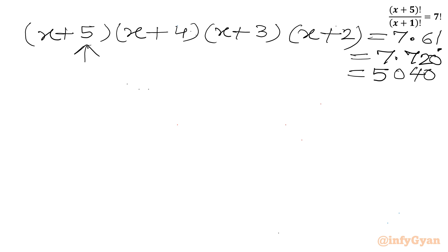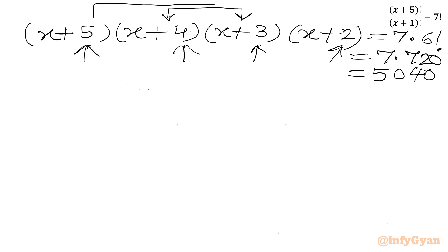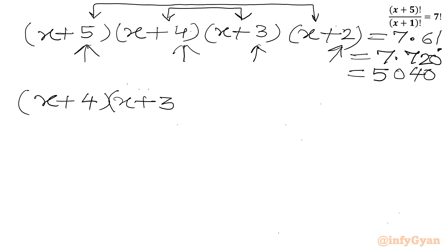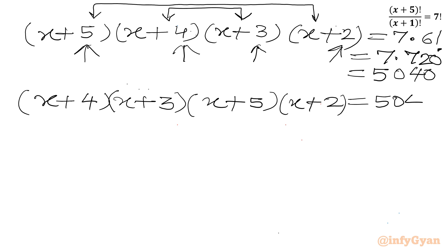If we add 5 and 2 we get 7, which equals the sum of 4 and 3. So let us club these two brackets together: (x+4)(x+3) and (x+5)(x+2), giving us (x+4)(x+3) times (x+5)(x+2) equal to 5040.